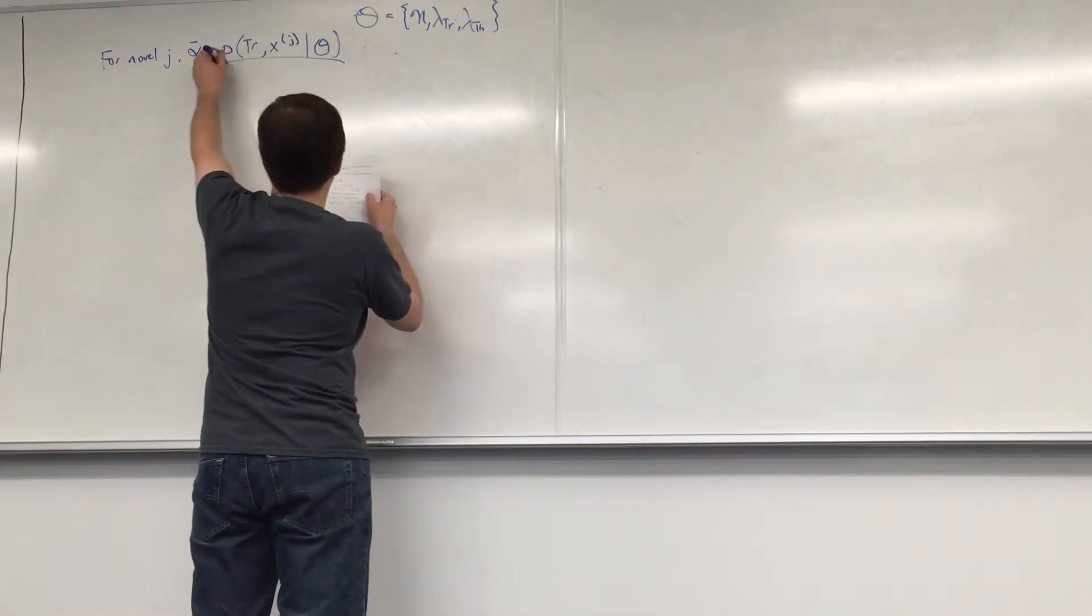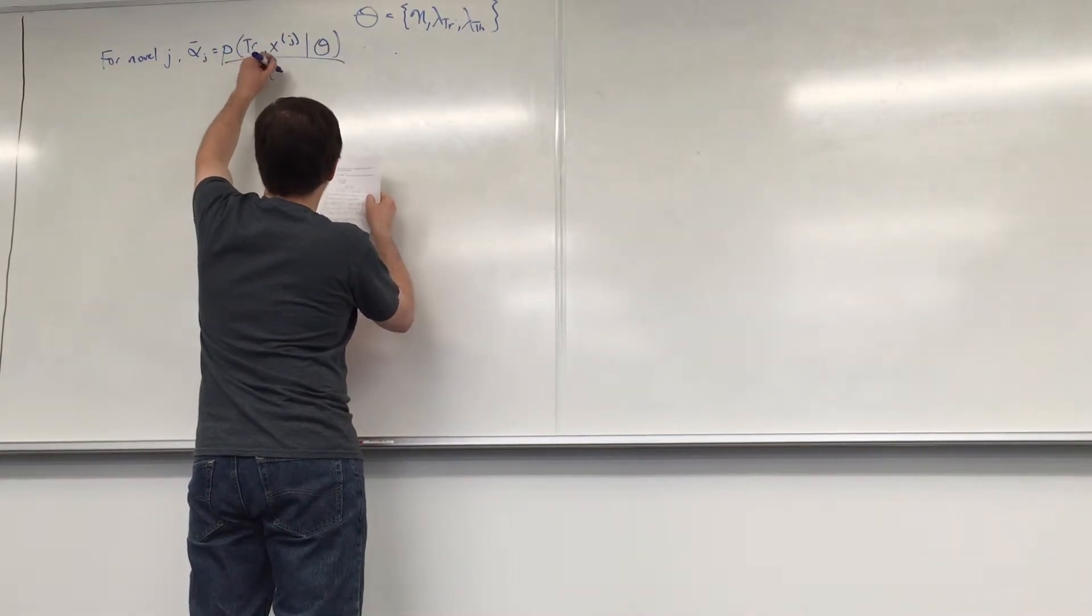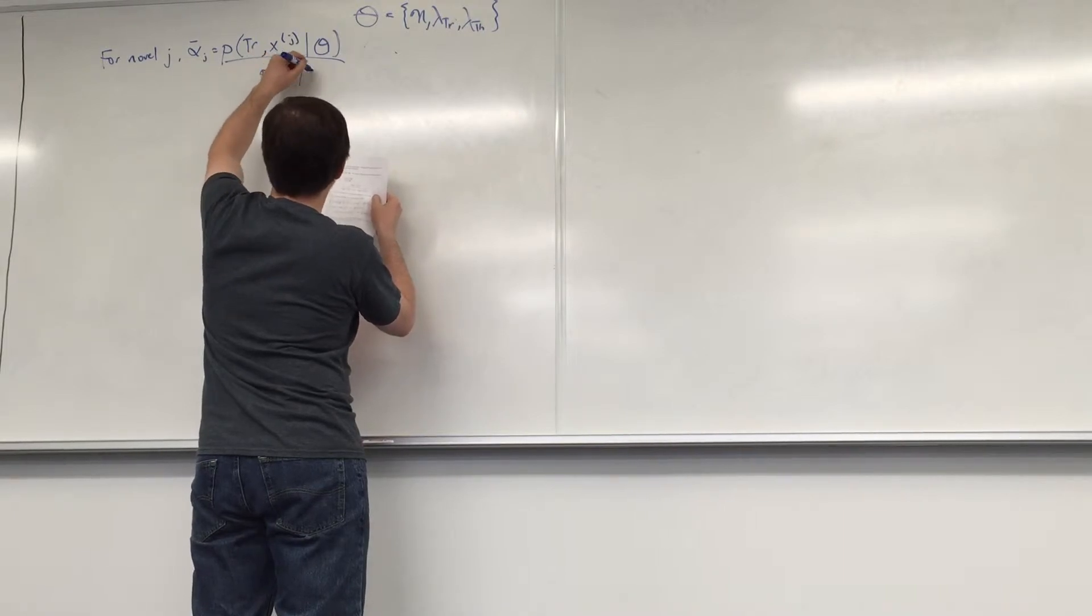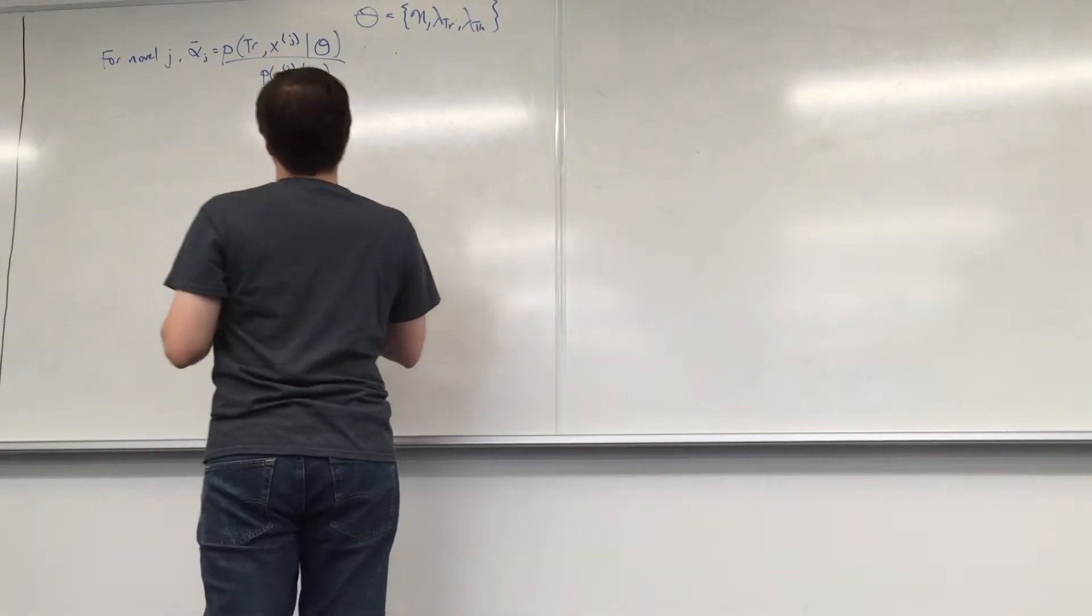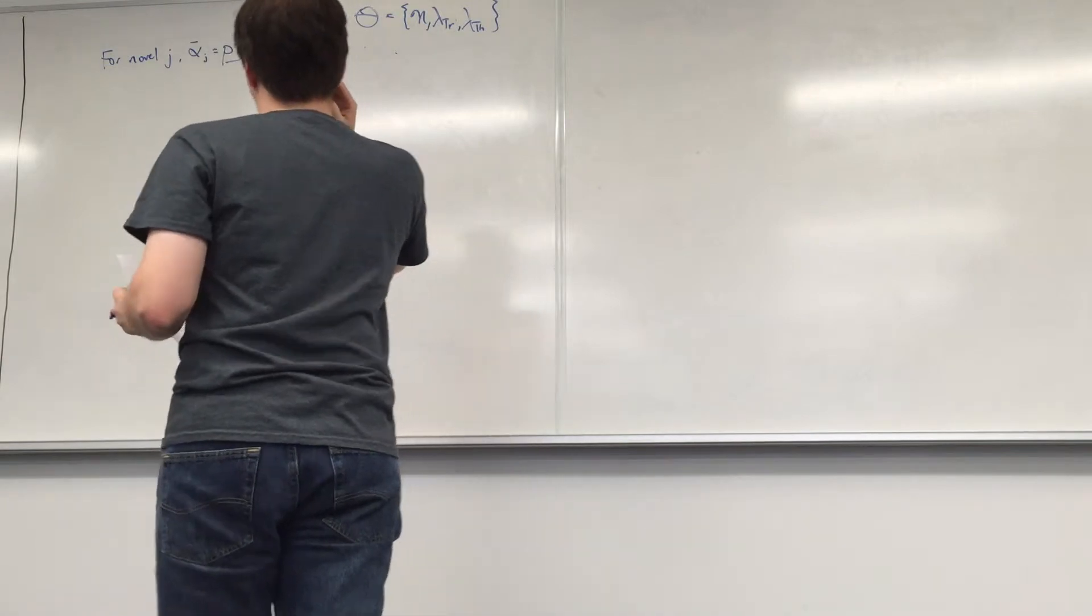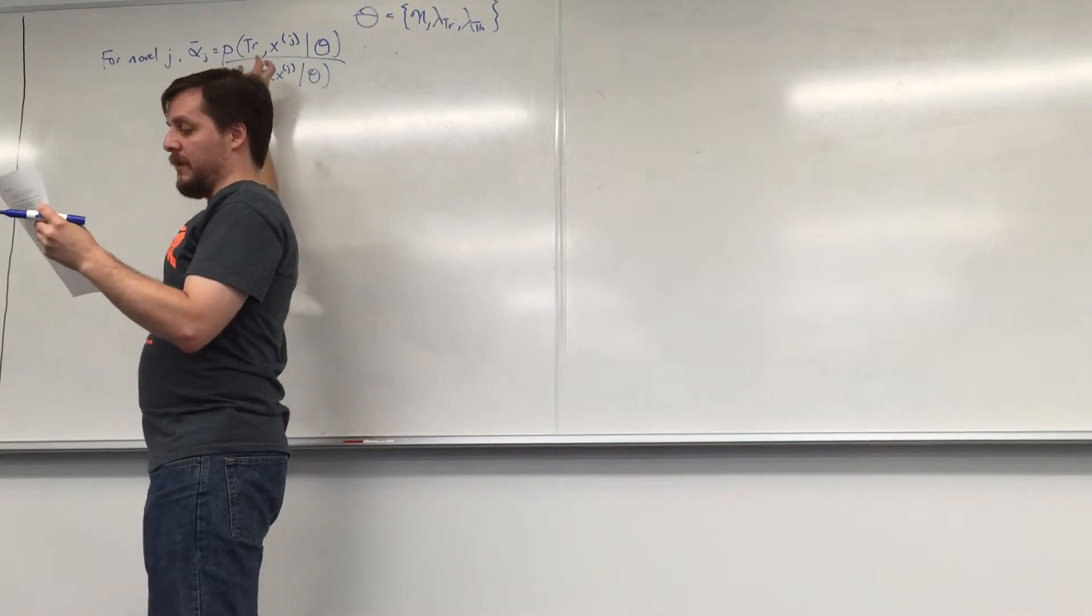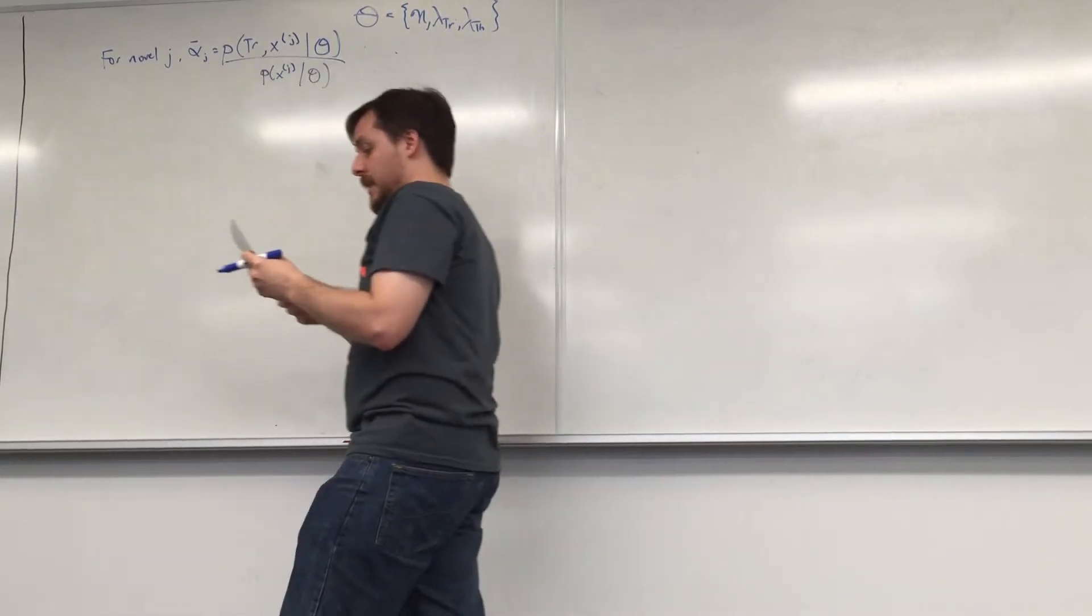Yeah, sorry. Over P of x of j. My notation's already wrong, so it should be heavy. Okay yeah, so all I'm doing here is computing the mixture model. Does this belong to one case or the other?